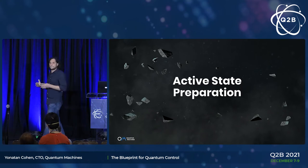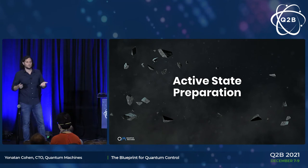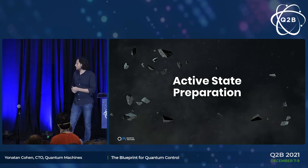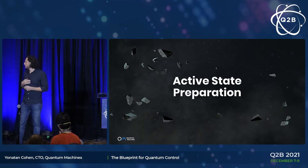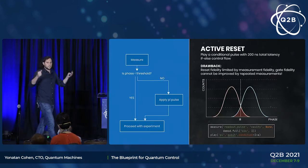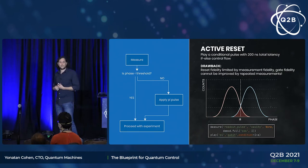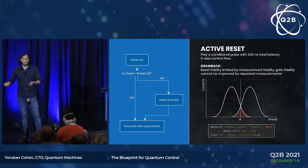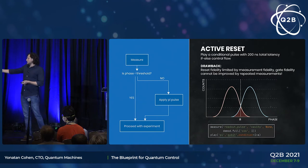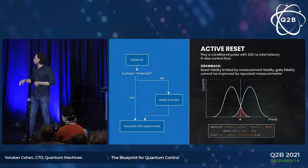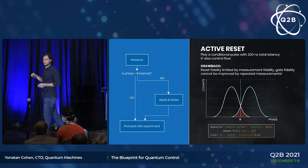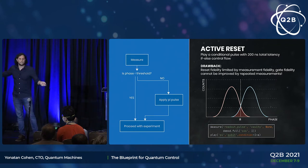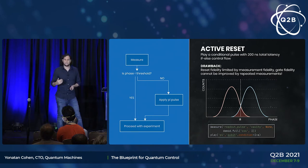Let's start with active state preparation, which is very important in quantum computing — we want to prepare quantum states with high fidelity. There are several different protocols that use active control to optimize state preparation. The simplest would be to measure your qubits and based on the results apply conditional operations to bring them to the desired state. These types of protocols are bread and butter for the pulse processor and for QUA — you can program them in a few lines of code and run them with best performance on the pulse processor.